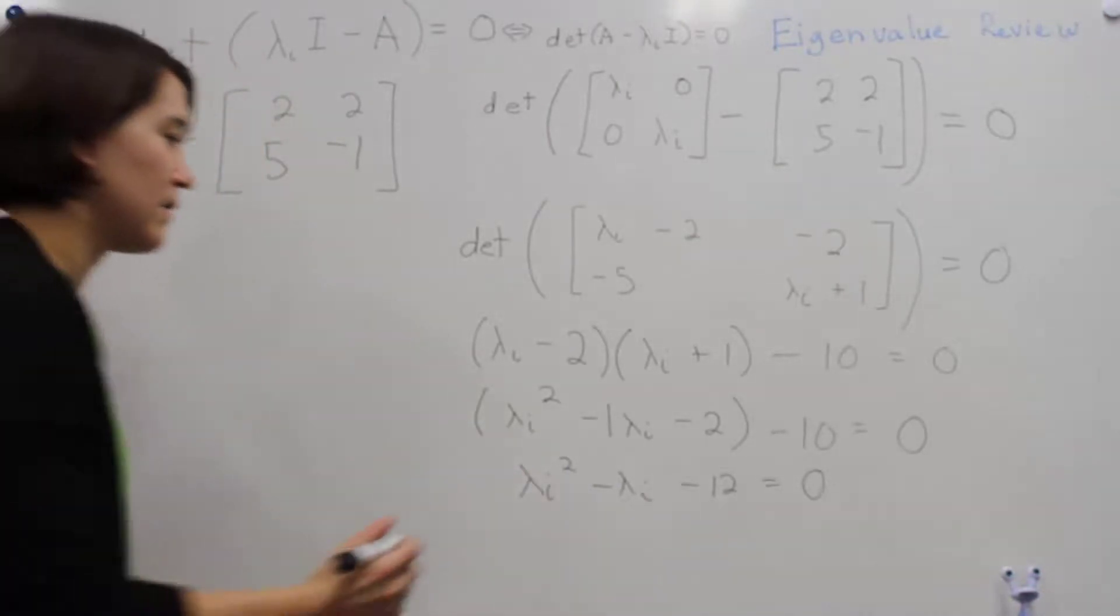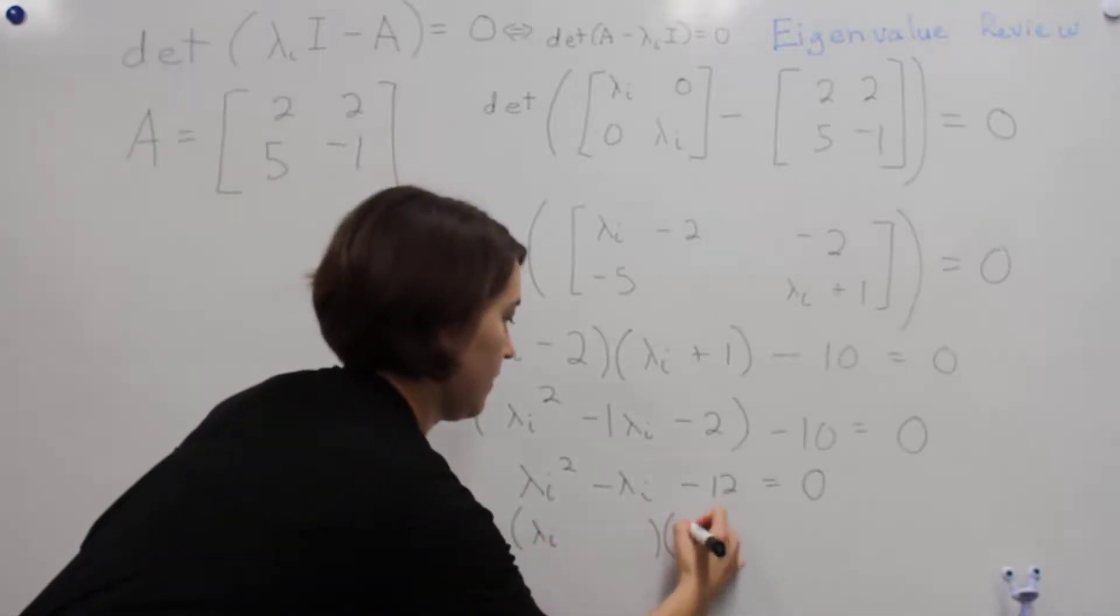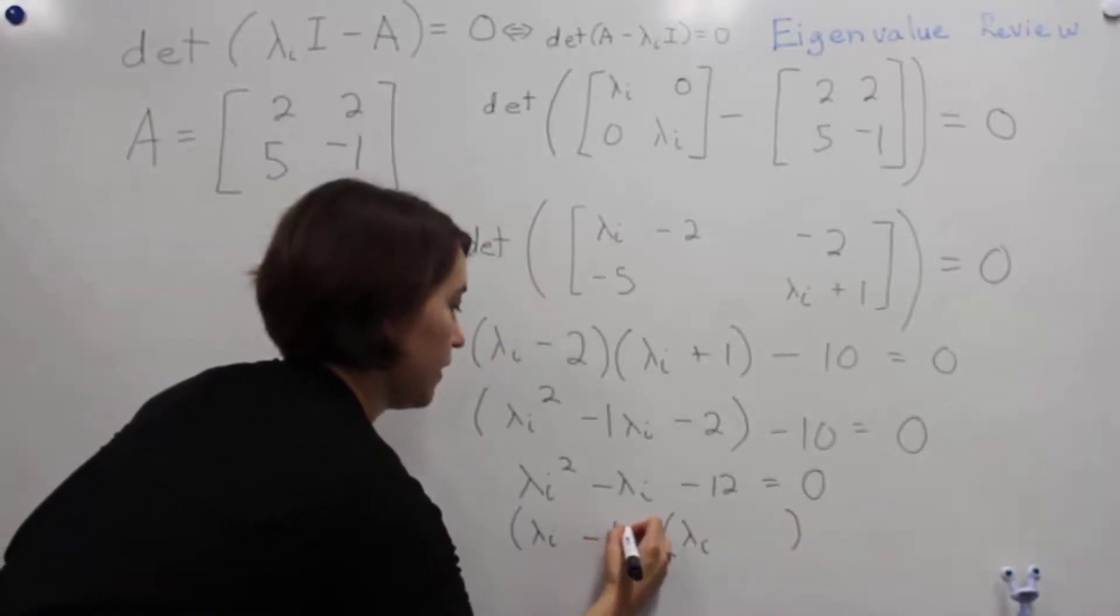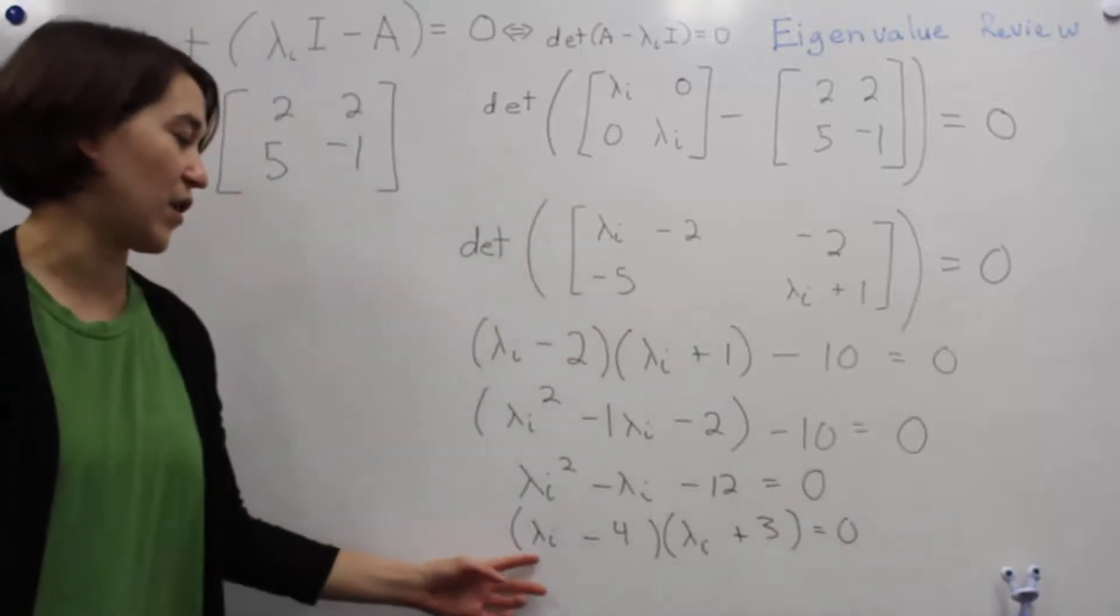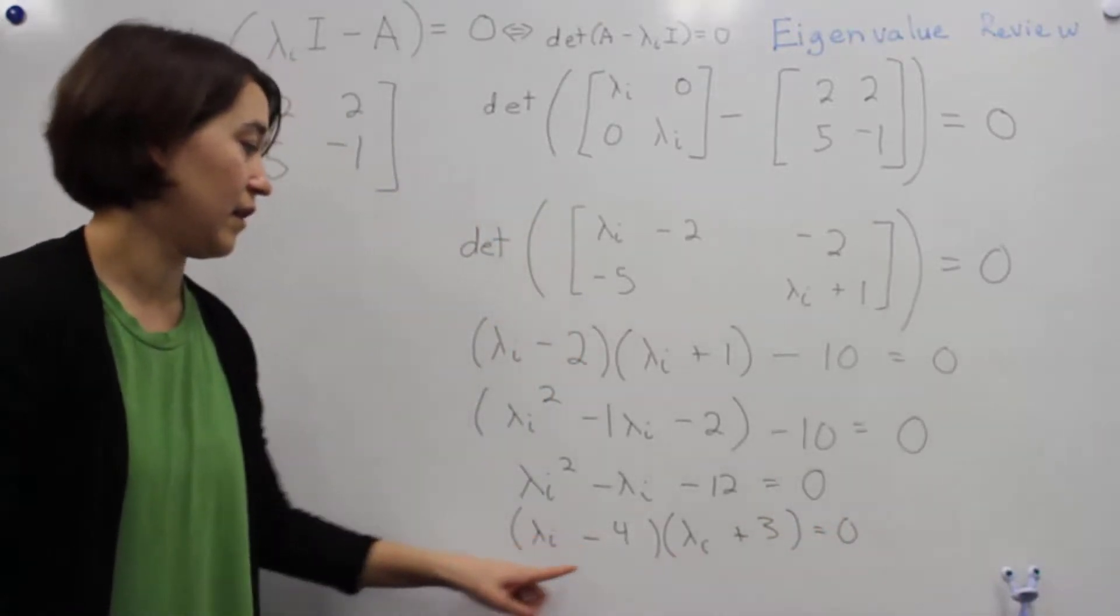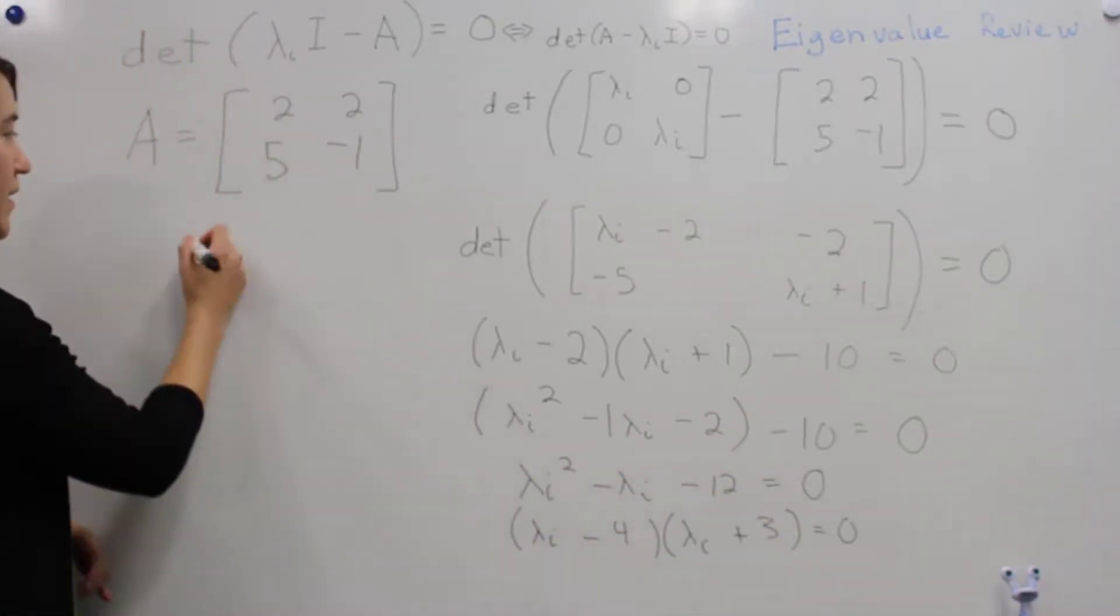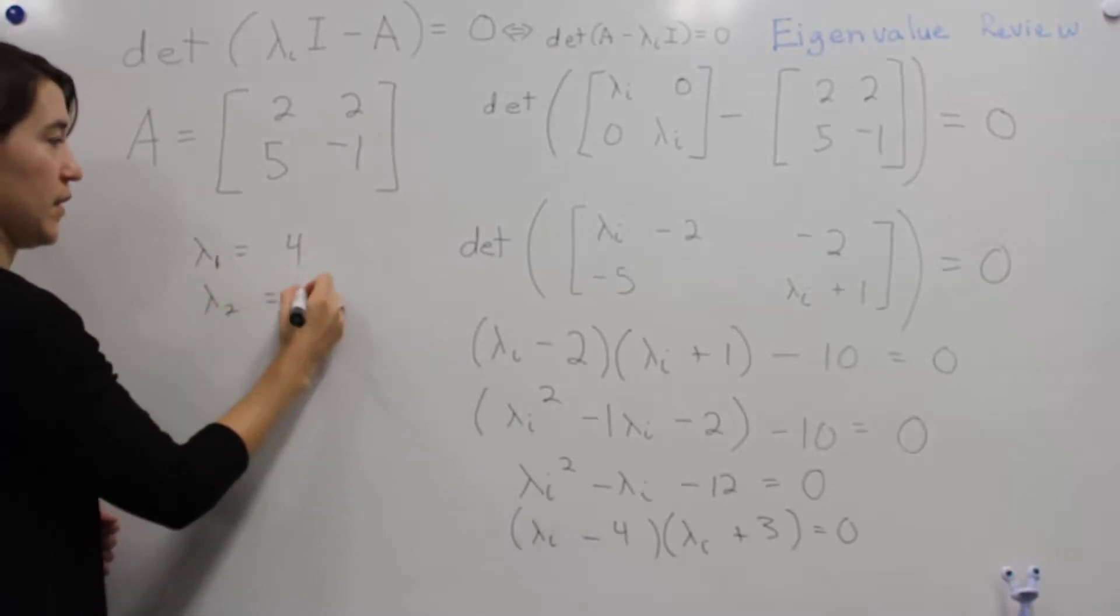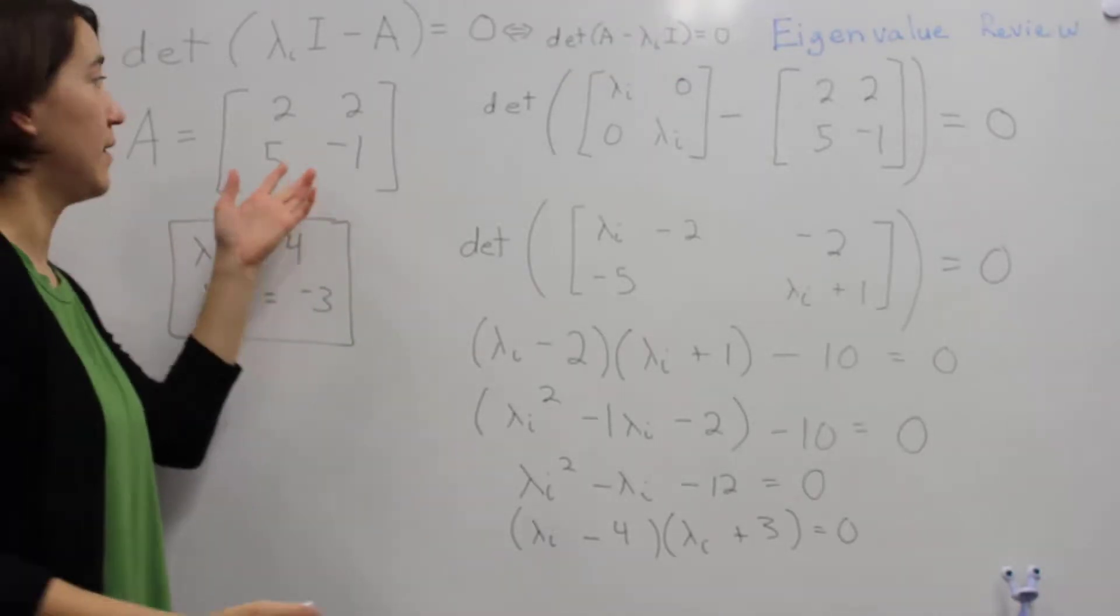Luckily this one works out, so we can see that this breaks down into a negative 4 here and a positive 3 here. So our eigenvalues are whatever values these lambdas would be to make this expression zero. So we say lambda 1 is equal to 4, lambda 2 is equal to negative 3. These are our two eigenvalues for this expression.